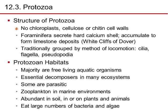Regarding protozoan structure: they have no chloroplasts, so they are not photosynthetic, and no cellulose or chitin in their walls. The Foraminifera secretes a hard calcium shell which accumulates to form limestone deposits, like the White Cliffs of Dover in England. Protozoa are traditionally grouped by method of locomotion — cilia, flagella, or pseudopodia — but are being reorganized based on RNA sequence analysis.